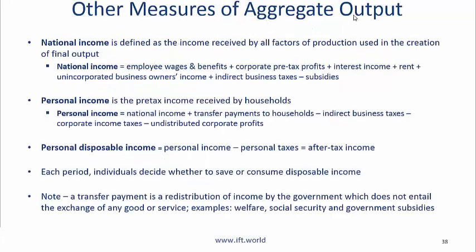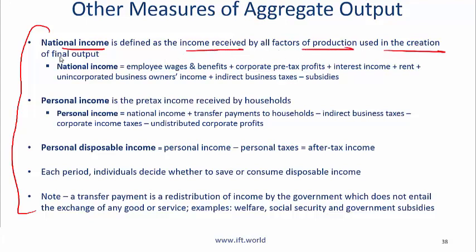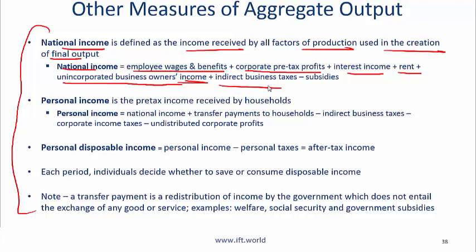Other measures of aggregate output — these are not all logical, you just need to remember them. Income is also a measure of output. National income is the income received by all factors of production used in the creation of final output. It equals employee wages and benefits, plus corporate pre-tax profit, plus interest income, plus rent, plus unincorporated business owners' income, plus indirect business taxes minus subsidies.